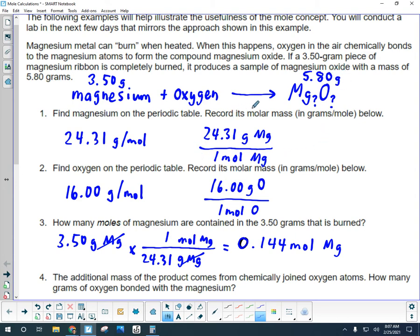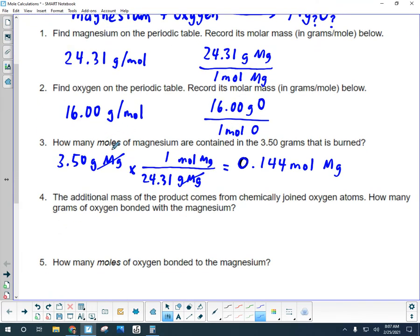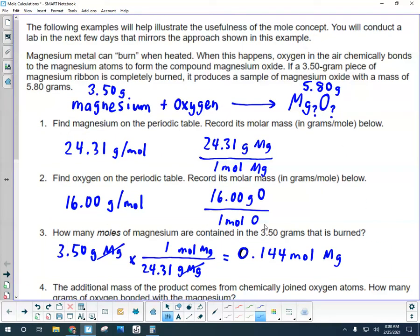We can assume that that additional mass comes from the oxygen that joined to the magnesium. So I need to figure out what would be that mass that gets me up to 5.80 grams total. So I need to subtract out, if I take the magnesium oxide and I subtract out the magnesium mass, what's left is the oxygen mass that bonded. So 5.80 grams of product minus the 3.50 grams of magnesium that we started with tells me that 2.30 grams of oxygen bonded with the magnesium.